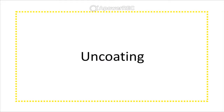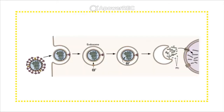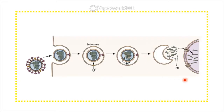Uncoating is a process seen in animal viruses where a virus enters a host cell, and it has its nucleic acids still inside the virion surrounded by a membrane. It needs to release those nucleic acid particles — that process is called uncoating.